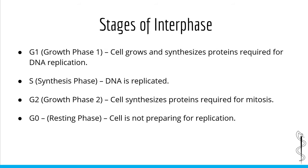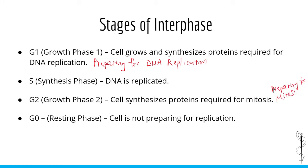Just like mitosis, interphase is composed of several phases. During G1 or growth phase 1, the cell grows, makes new organelles, and synthesizes proteins required for DNA replication — it is preparing for DNA replication. During the S phase or synthesis phase, the cell's DNA is replicated. During G2 or growth phase 2, the cell synthesizes the proteins required for mitosis in preparation for cell division. Cells in the G0 phase are not preparing for replication but are in a resting state. Cells which enter G0 may stay permanently there or may re-enter the cell cycle and undergo mitosis.